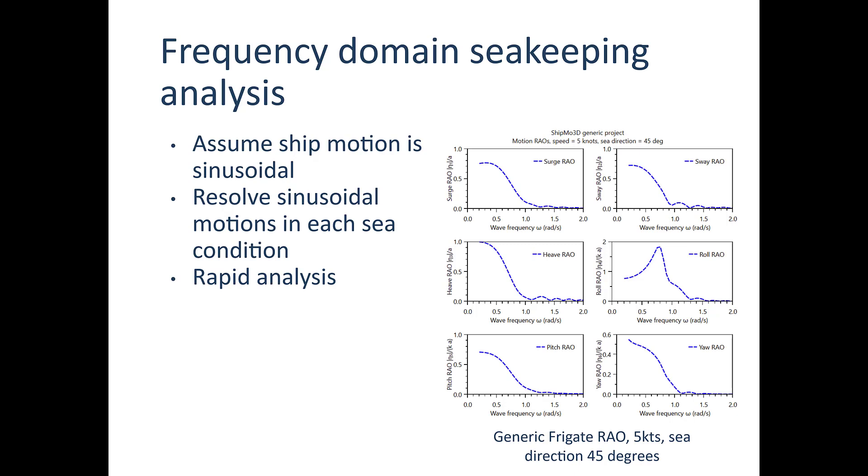And you can see just an example of a response amplitude operator of the generic frigate at 5 knots forward speed with sea direction at 45 degrees. And each of these plots indicates the different degrees of freedom of the vessel, the response of the different degrees of freedom.